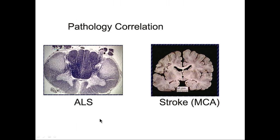ALS — amyotrophic lateral sclerosis — is a devastating disease that wipes out both upper and lower motor neurons, so you get a double whammy. Here the corticospinal tract is wiped out, as seen in this myelin stain where myelinated fibers are dying. The anterior horn cells are also dead.